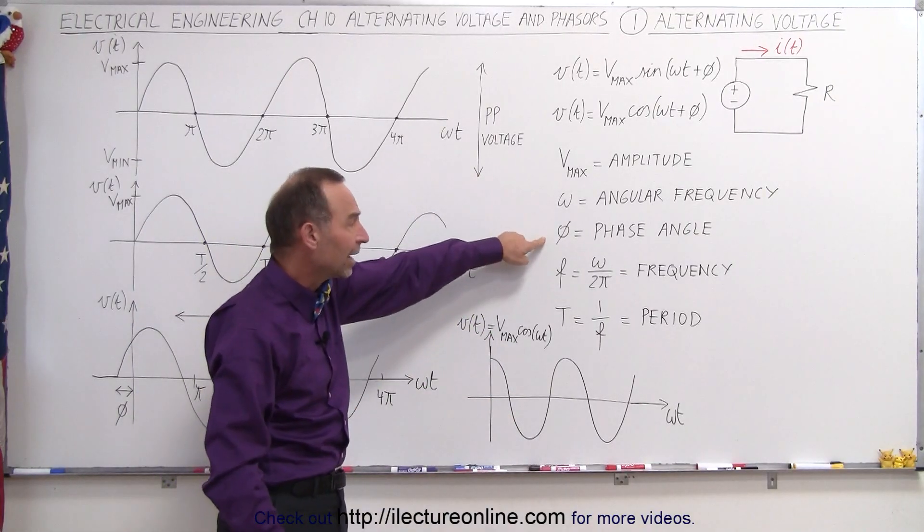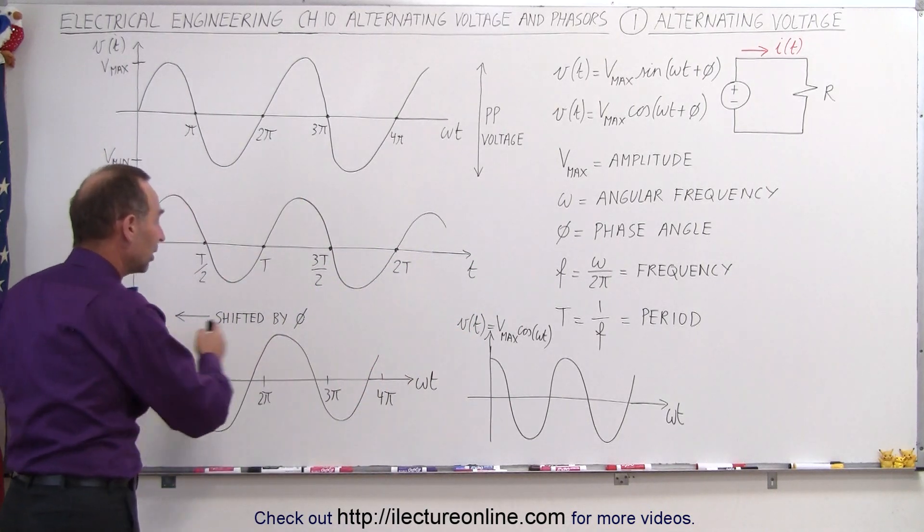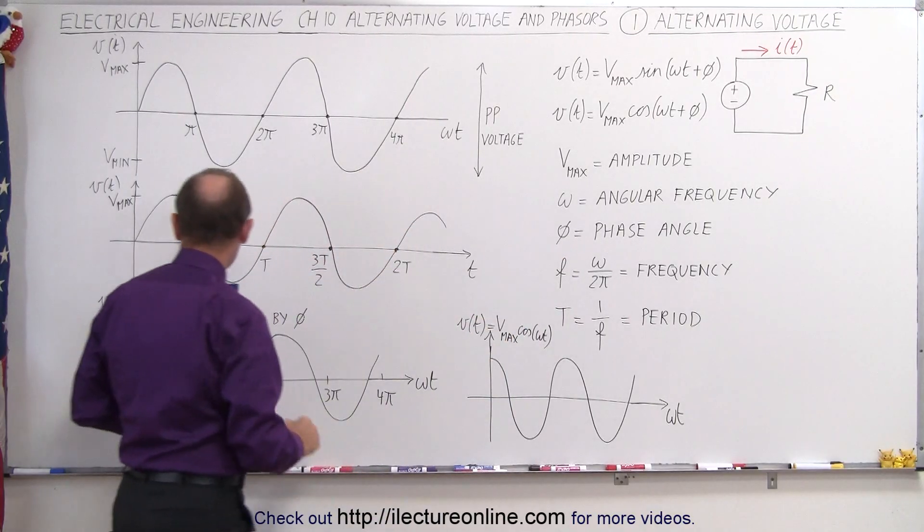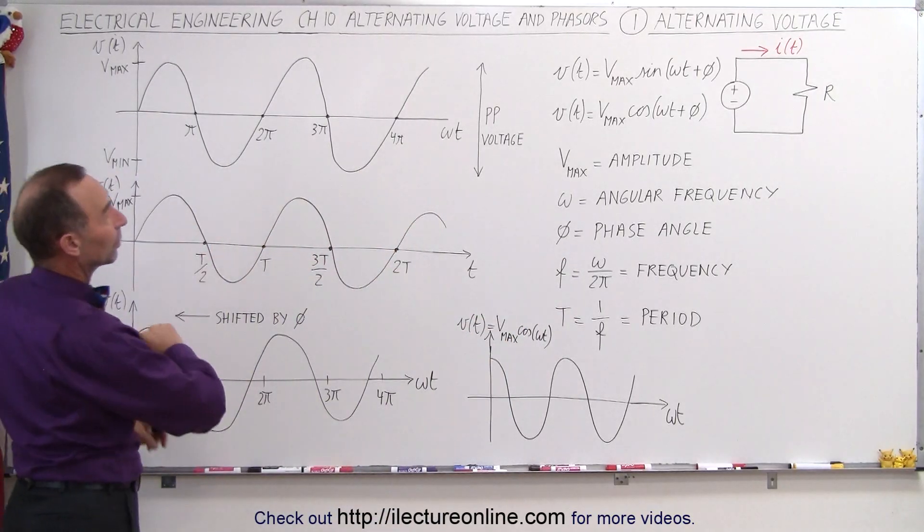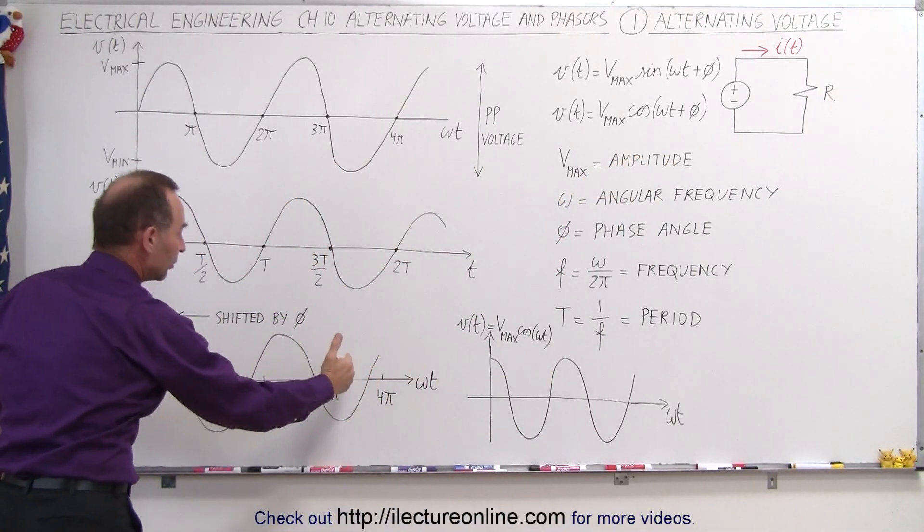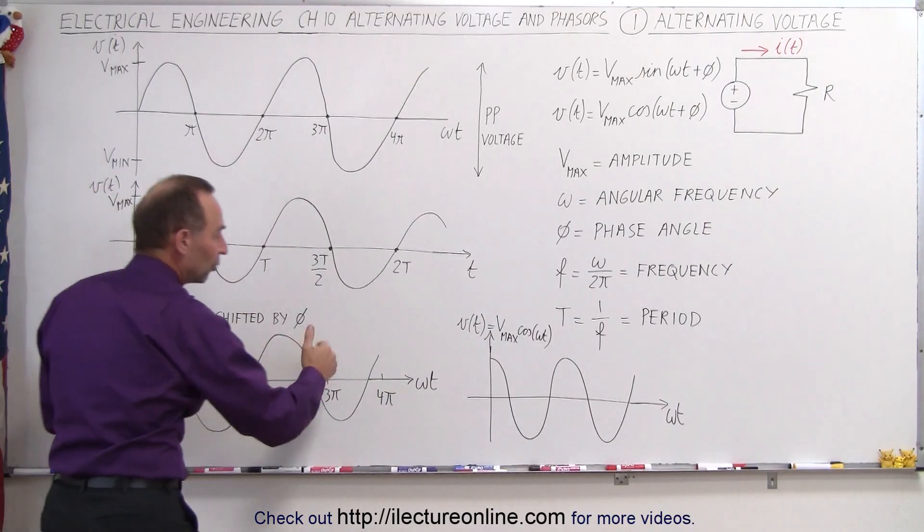We also have a phase angle, which means that at time equals zero, the voltage could be shifted either to the left or to the right. Graphically, if we add a phase angle plus φ, then it takes the graph and it shifts to the left. If it's negative, it shifts to the right.